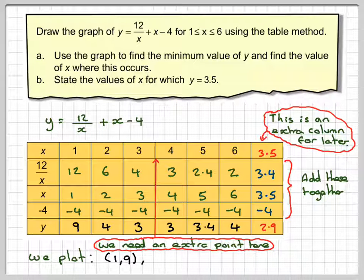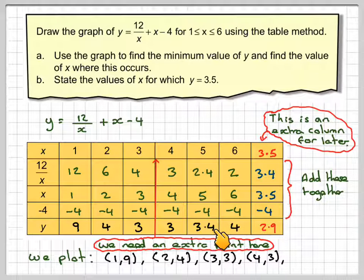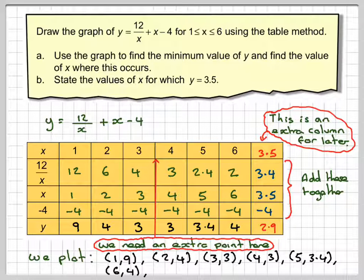We will plot (1,9), (2,4), (3,3), (4,3), (5,3.4), (6,4), and our extra point (3.5,2.9).